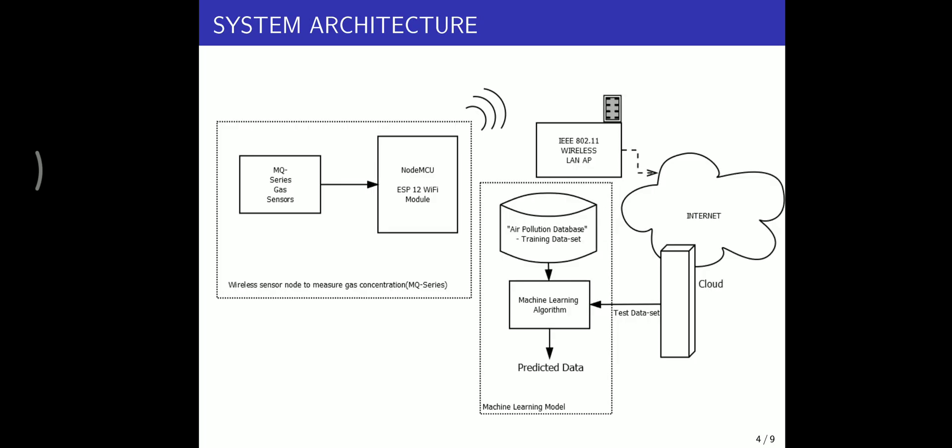This is our proposed system architecture. Our system has MQ series gas sensors which can be MQ2, MQ135, and MQ7 gas sensors. These gas sensors detect the gases and send it to the NodeMQ. NodeMQ contains an inbuilt Wi-Fi module. The NodeMQ sends the data through wireless network to wireless LAN AP which gives the data to the cloud via internet.